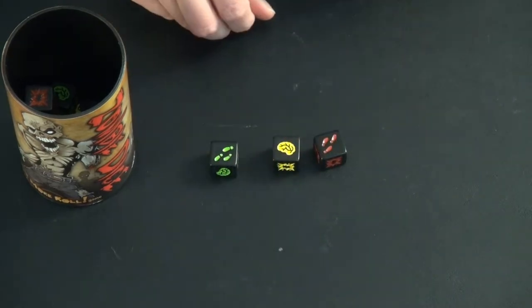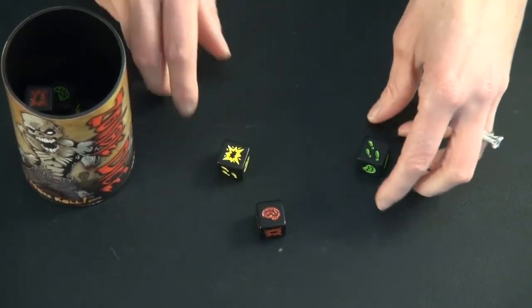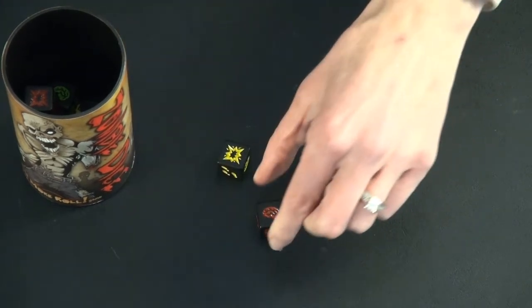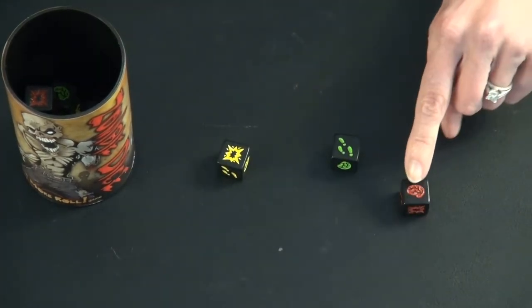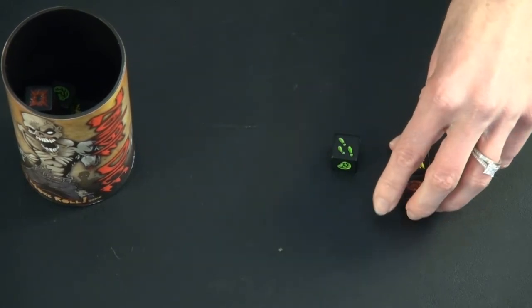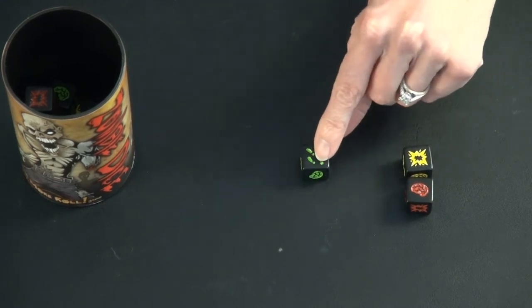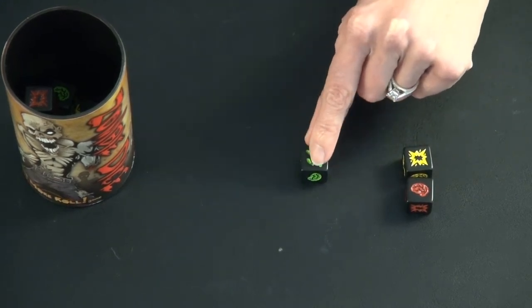So if you get a bunch of green dice, you are happy about that. Once you've gotten them, you give it a shake. And how the game works is you get to save any brains that you roll. You have to put any shotguns off to the side to be saved with the brains. And you can re-roll any footprints. Those are people who got away.